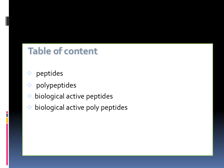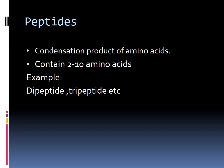Firstly, I will talk about peptides. Peptides are the condensed product of amino acids — condensed product means that amino acids are combined together by the help of a peptide bond. Peptides contain only two to ten amino acids. Examples of peptides are dipeptides and tripeptides. These are a type of protein because they have the same building block as proteins.